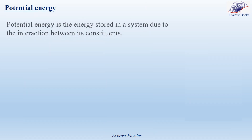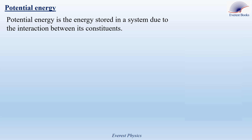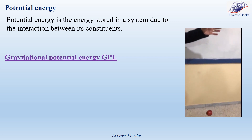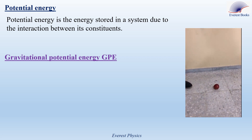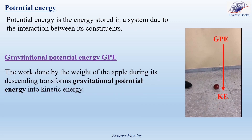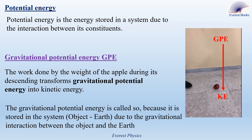Now let's move to the potential energy. Potential energy is the energy stored in a system due to the interaction between its constituents. This definition may seem strange, but it will be clear when I explain the gravitational potential energy. This apple is released from rest and gains kinetic energy. The work done by the weight of the apple results in a transformation of stored energy into kinetic energy. This energy is called the gravitational potential energy. Each conservative force is associated with a type of potential energy. So the gravitational potential energy is stored in the system object-Earth due to the gravitational interaction between the object and the Earth.